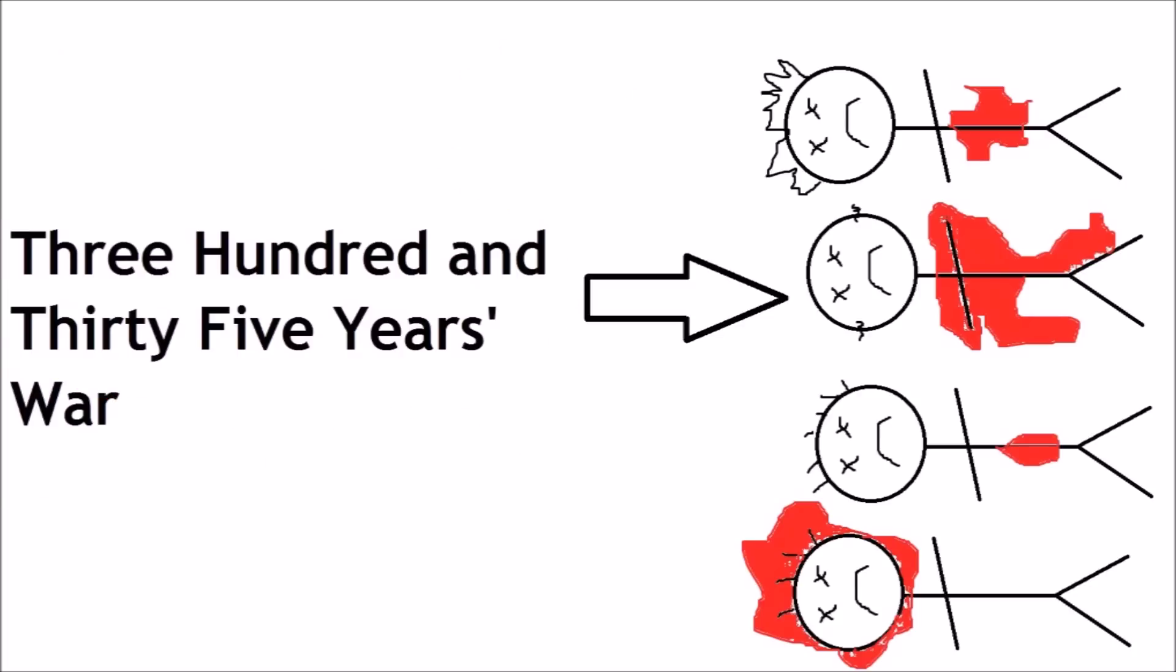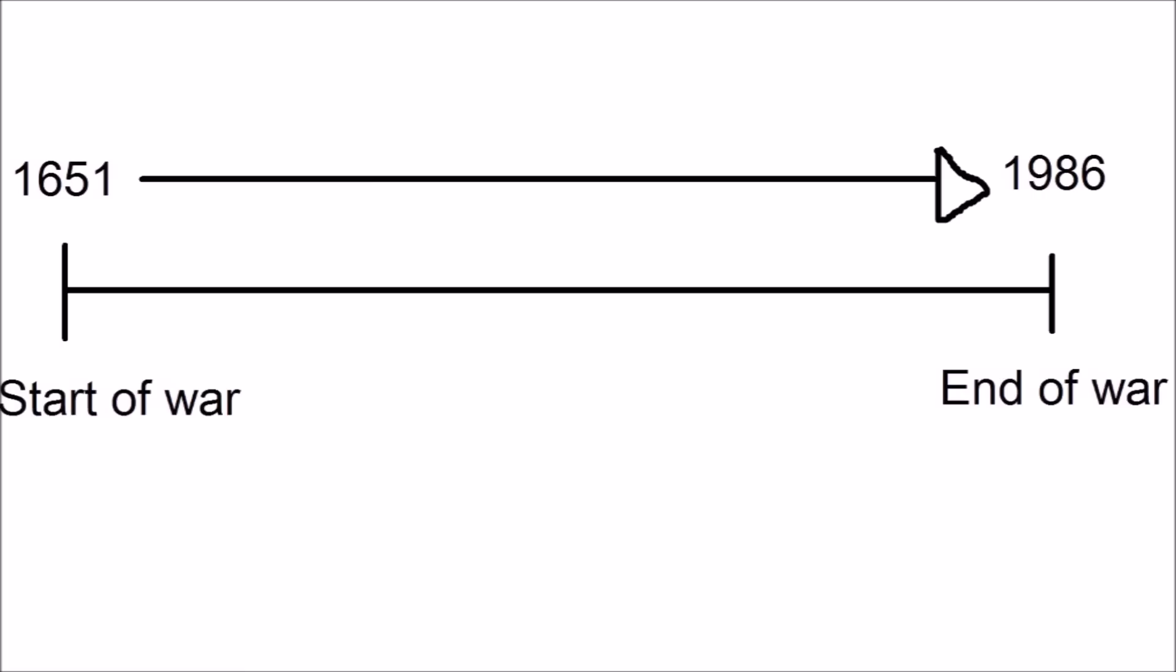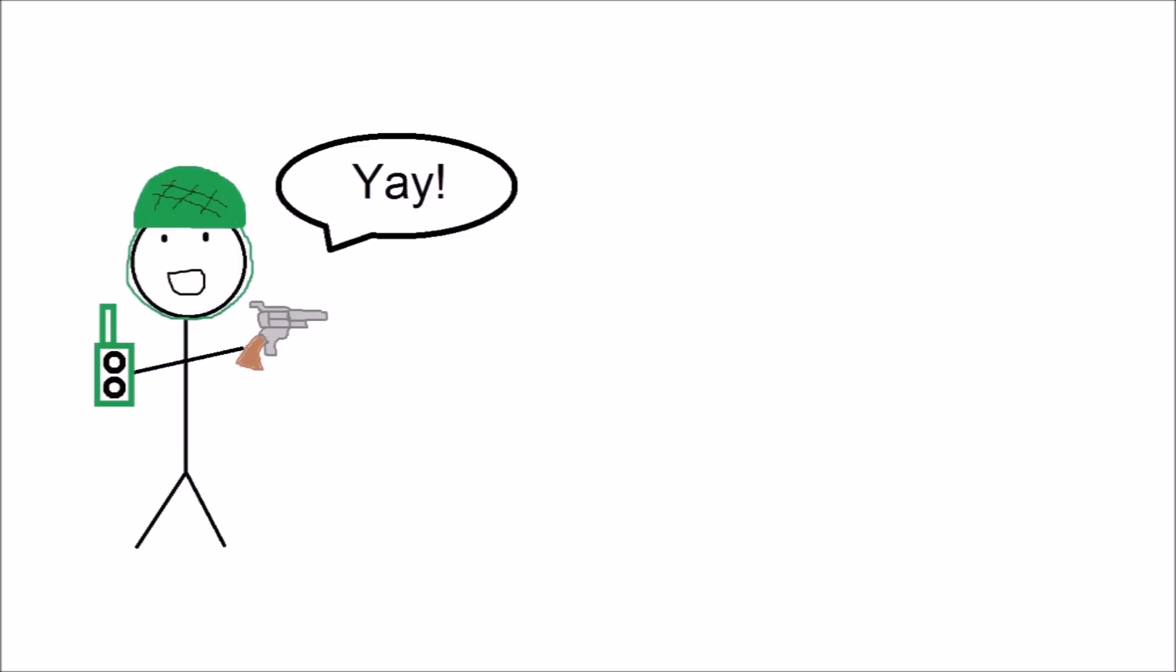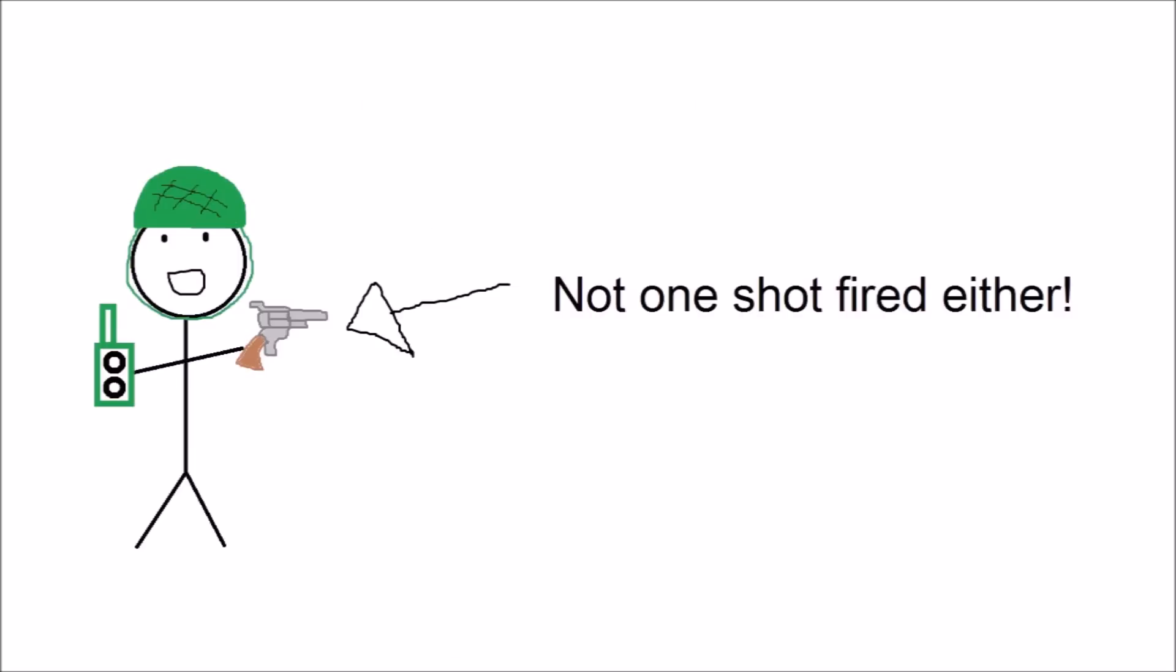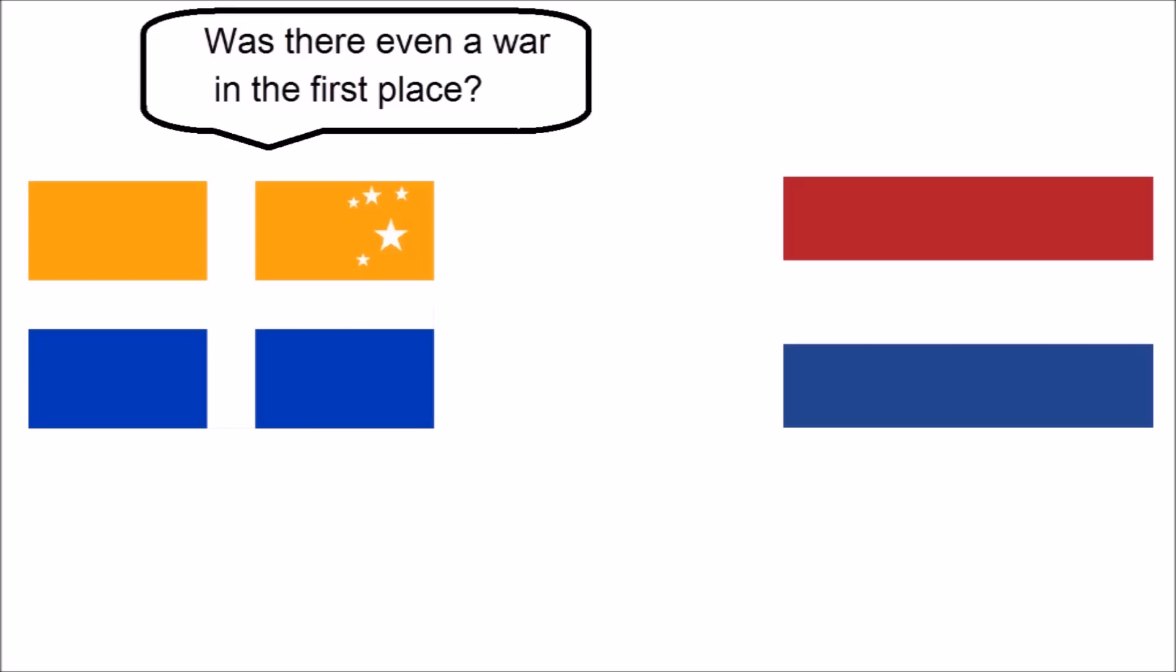War number one: The 335 Years War. I'll give you no money for guessing how long this war went on for, but surely a war at this length would result in many casualties, right? No. Over the 335 years of conflict between the Netherlands and the Isles of Scilly, not one soldier was killed and not even one shot was fired throughout the entirety of the war. The conflict was officially ended and the war had dragged on for so long that the two countries were unsure whether a state of war actually existed in the first place.